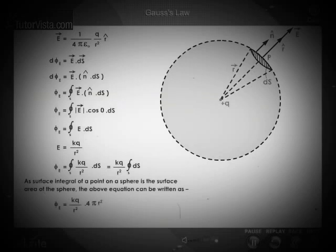Therefore, phi E equals Kq dot 4 pi R squared. But, K is equal to 1 by 4 pi epsilon naught.